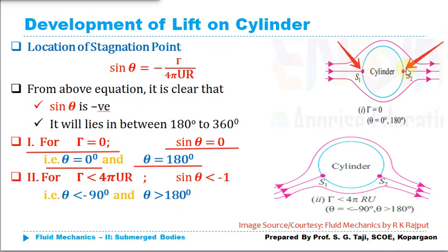Case 1: circulation γ = 0. If there is no circulation, sin(θ) = 0, which gives θ = 0° and θ = 180°. So stagnation point 1 is located at 0° and stagnation point 2 is at 180°. This corresponds to the ideal fluid case with no rotation given to the cylinder.